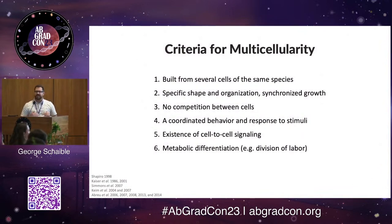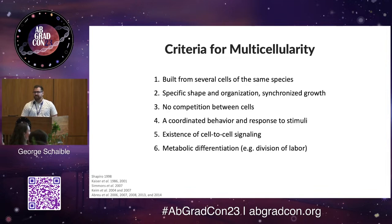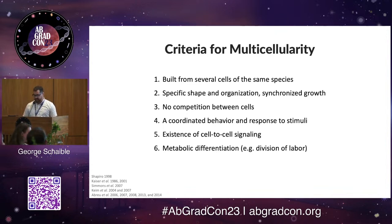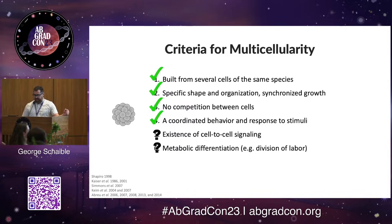It helps when we think of multicellularity to have some criteria for what that is. These would include: built from several cells of the same species, specific shape and organization, synchronized growth (which excludes things like cancer), no competition between cells, coordinated behavior and response to external or internal stimuli, existence of cell-to-cell signaling, and metabolic differentiation or division of labor. With my organism, they fit the first four, and the last two are what we're currently looking into.